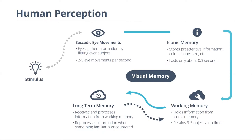Studies have been done on how many objects people can keep in memory at once, and it's usually around three to five. So if we have a page with multiple graphs or a graph with many objects, and we want people to compare certain objects, they have a limit to how many they can remember and how many features of those objects they can hold. Our long-term memory then does the heavy-duty work of receiving information from working memory and reprocessing it when we encounter something familiar.